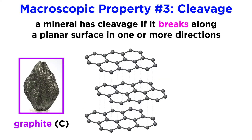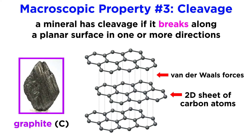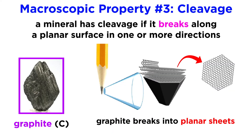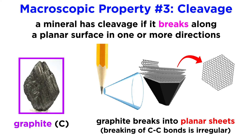For example, graphite is composed of stacks of two-dimensional sheets of carbon atoms bonded together through van der Waals forces. The carbon atoms themselves are strongly bonded within a sheet, but the bonds between the sheets are extremely weak. Because of this, when graphite is broken, it breaks into planar sheets along the direction of the weak van der Waals bonds, but breaks irregularly along the direction of the stronger, more isotropic covalent bonds.